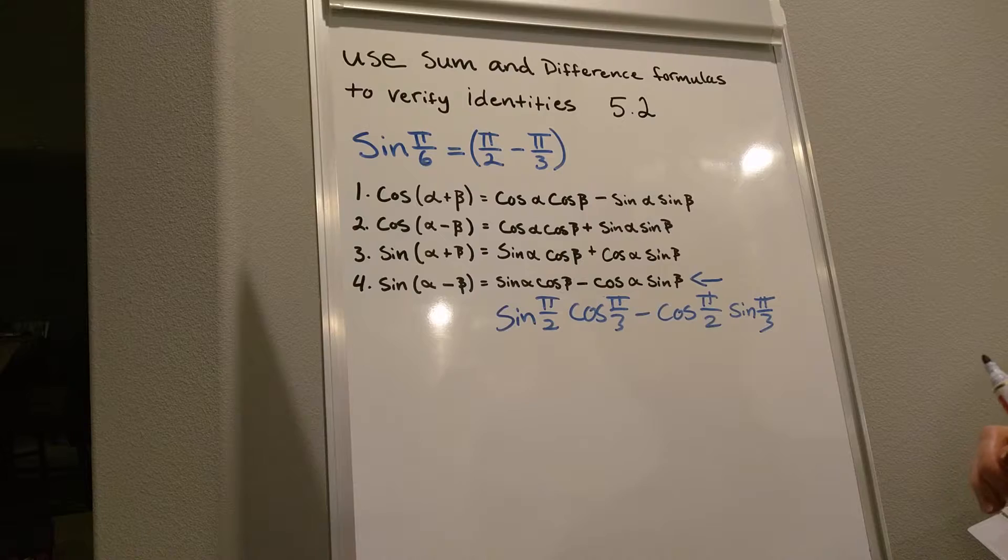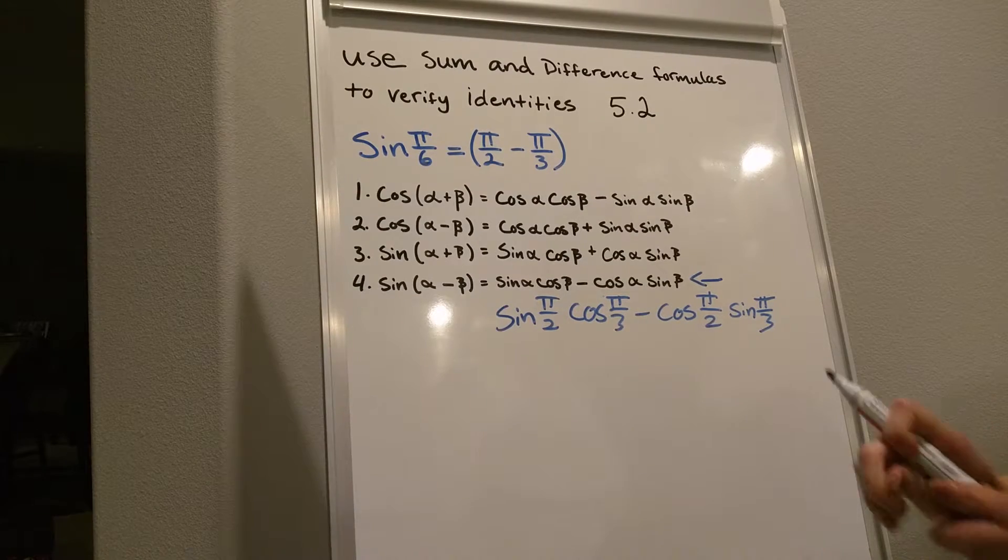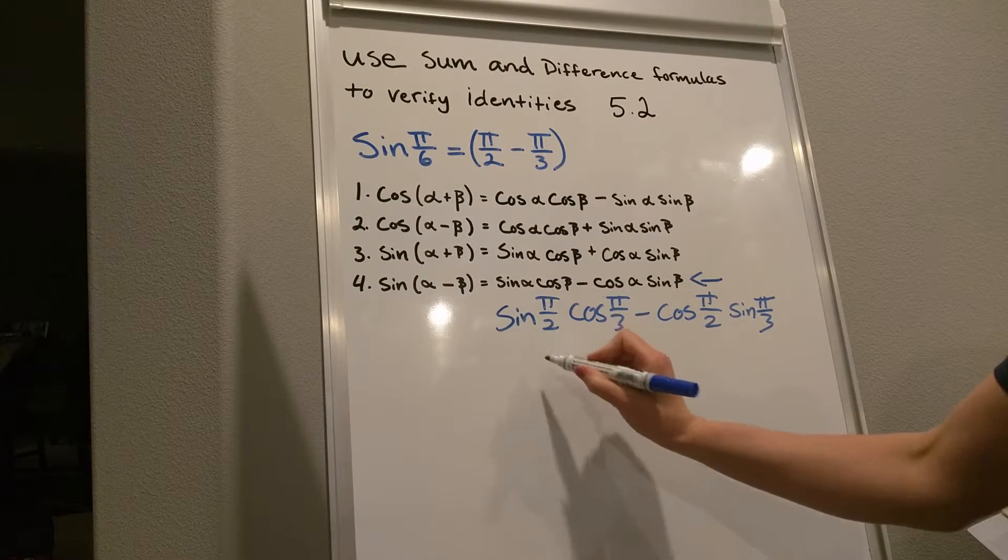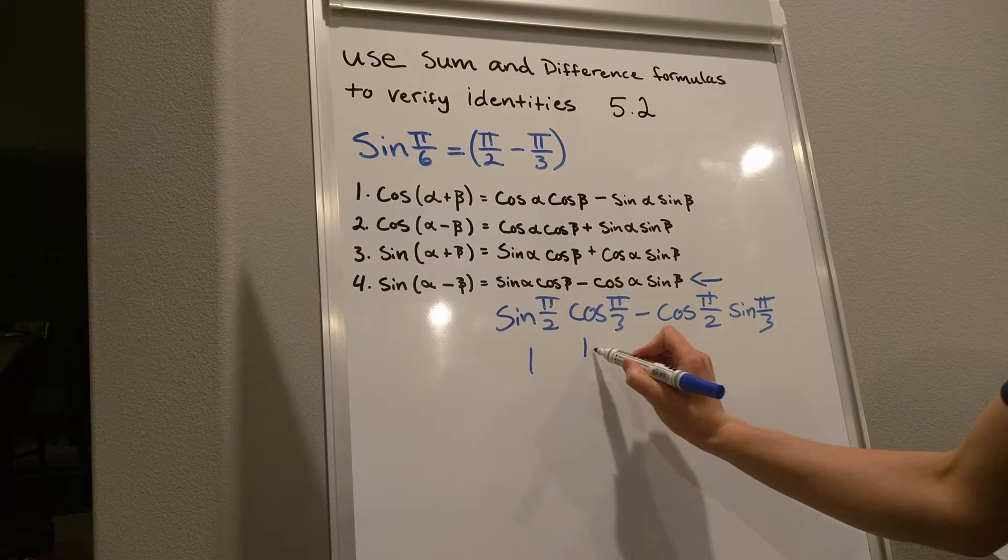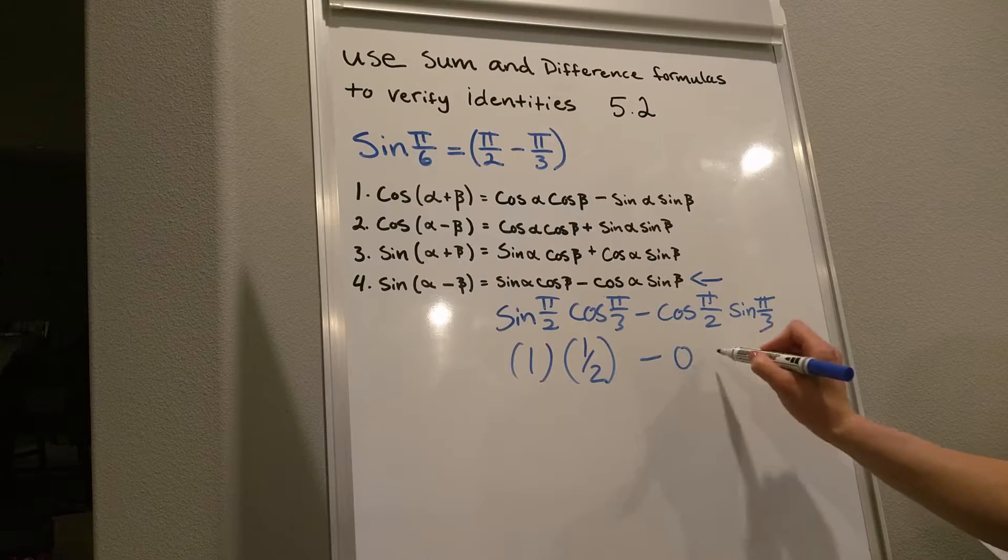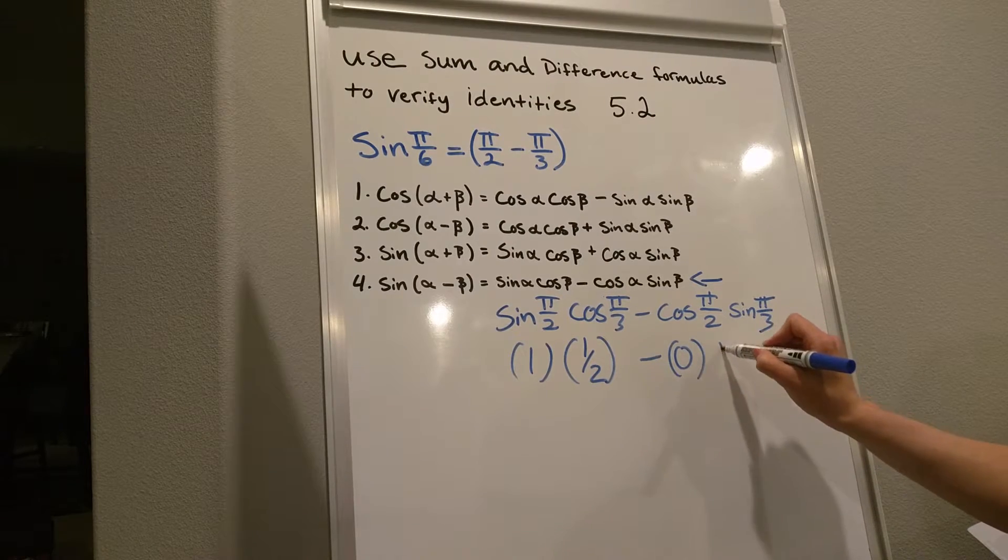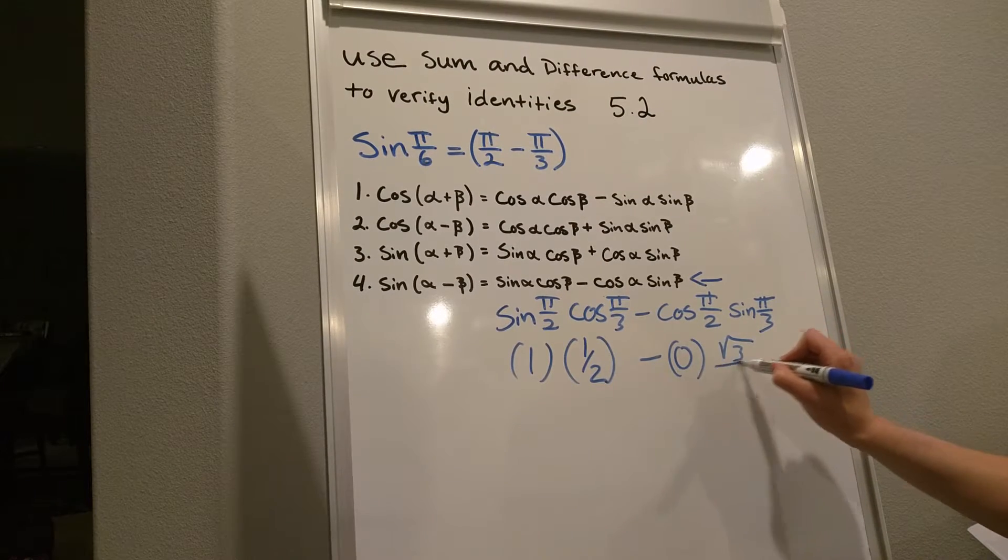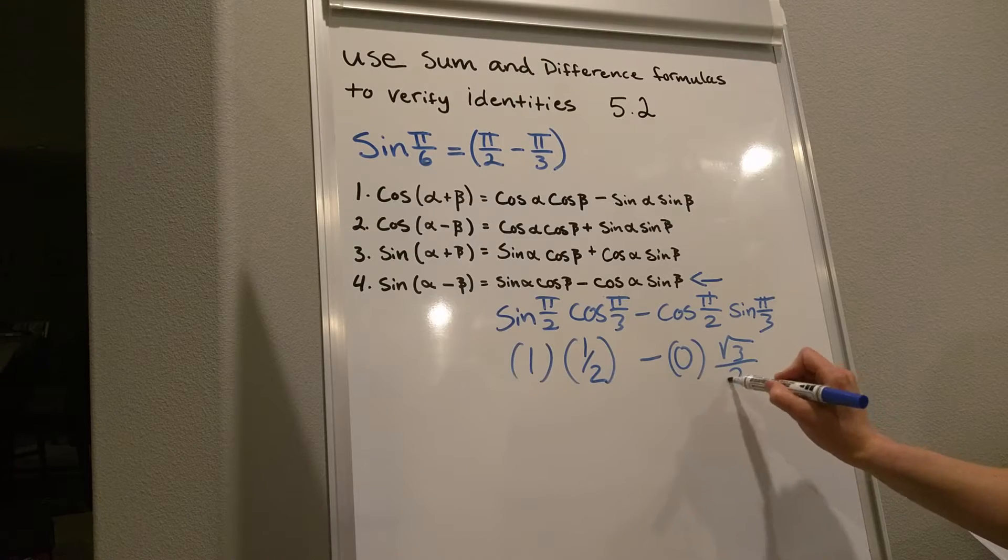And if you remember from our unit circle, the value for sine pi over 2 is 1, and we have 1 half minus 0 and over 2.